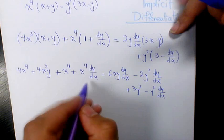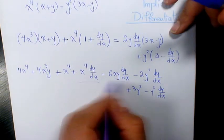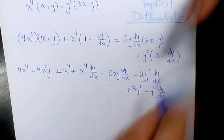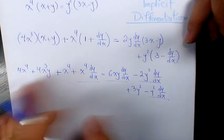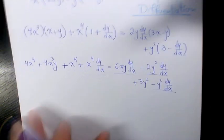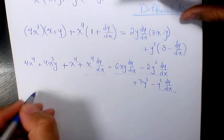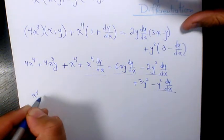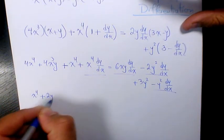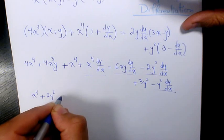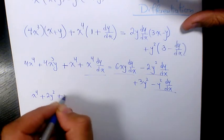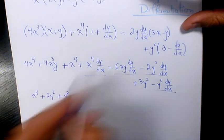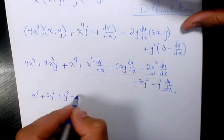Now we have four terms — we need to keep them all on the left-hand side. So it's going to be x to the power of 4 plus 2y squared plus 2y squared plus y squared...